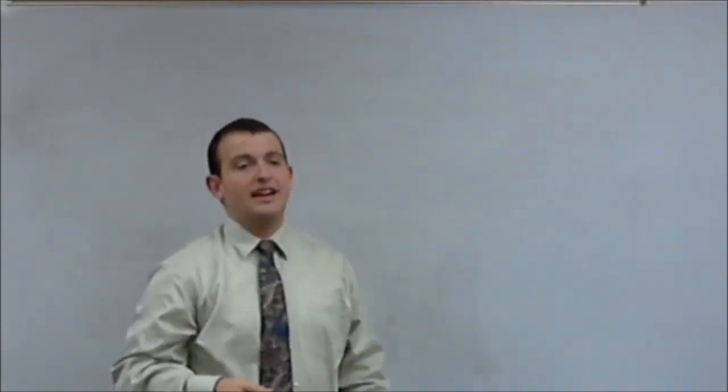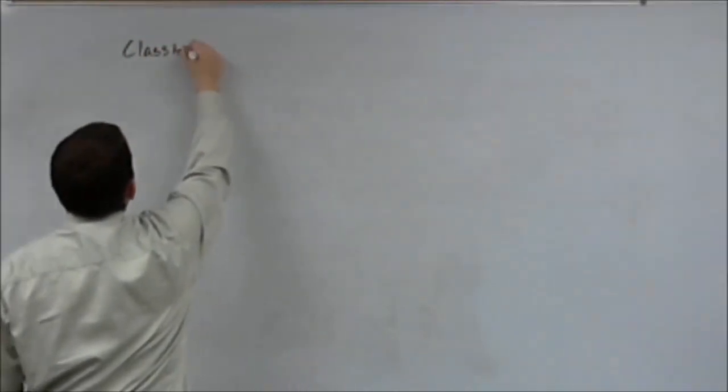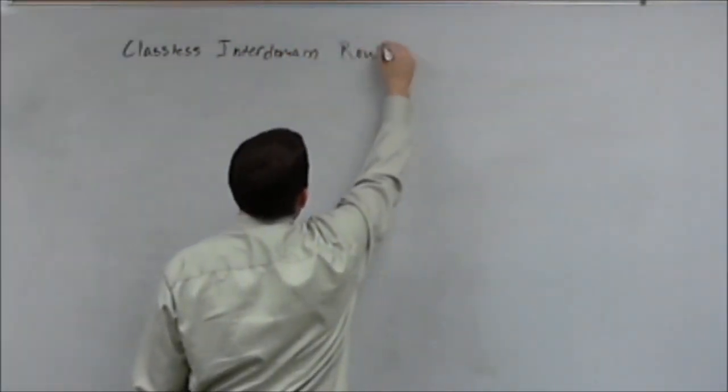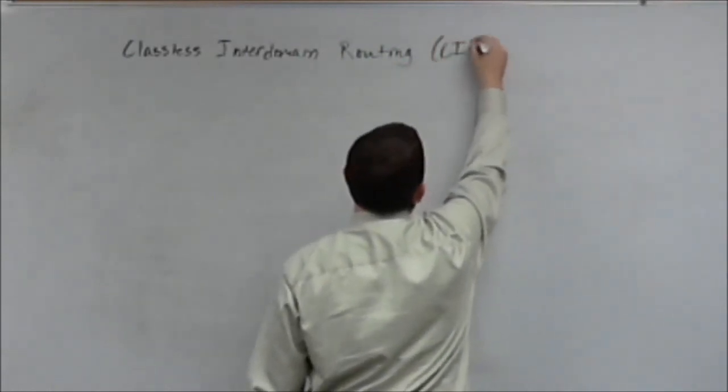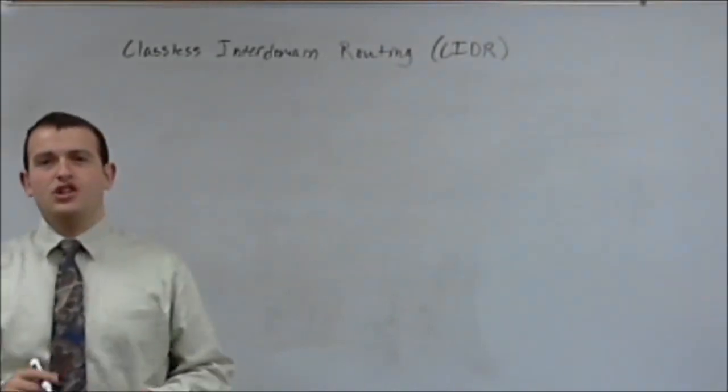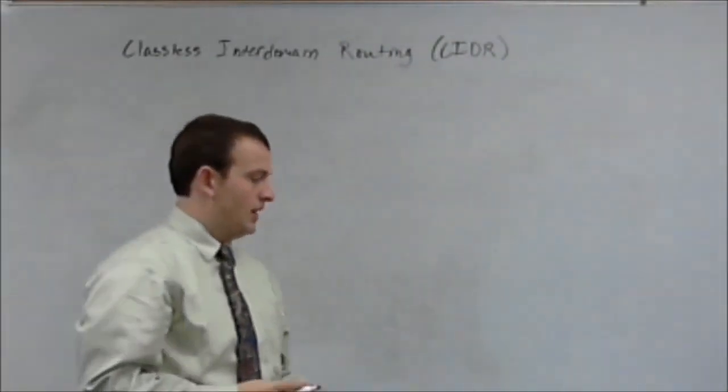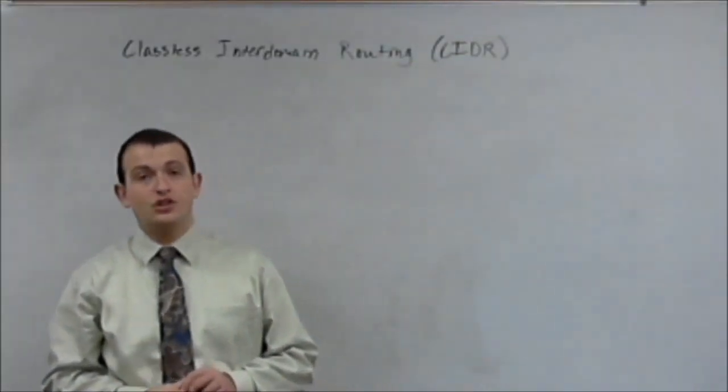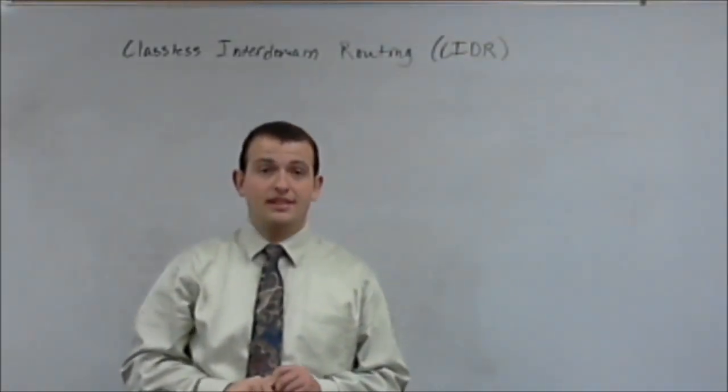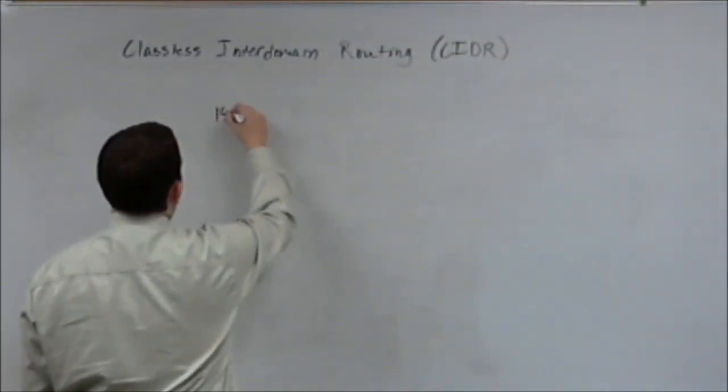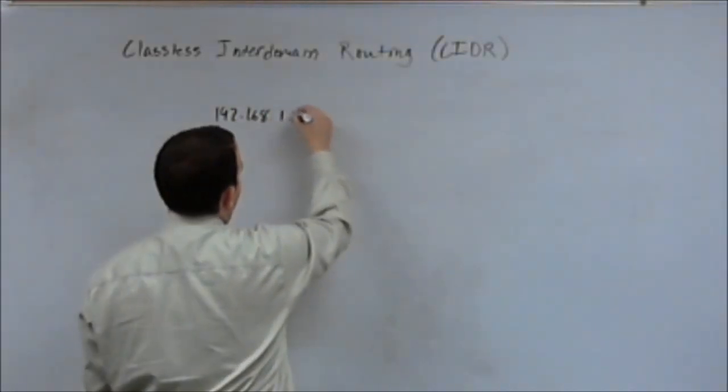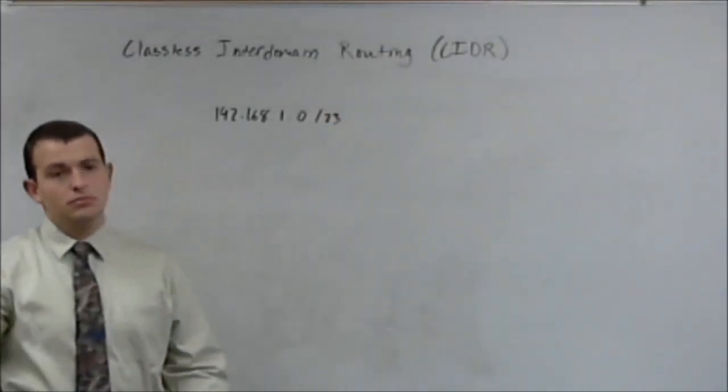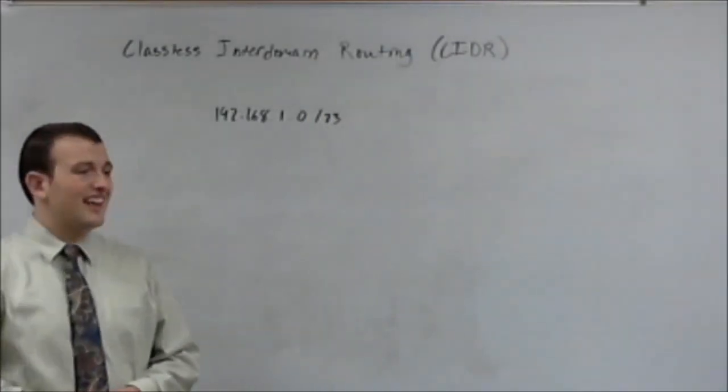So up next, we have the new standard, which is classless inter-domain routing. For short, CIDR. This is where we get CIDR notation or slash notation from. This protocol is classless and can allocate any subnet to any specific address range based on your need for hosts and for subnets. So you could have a 192.168.1.0 network with a slash 23 range if you needed it. That is CIDR notation.